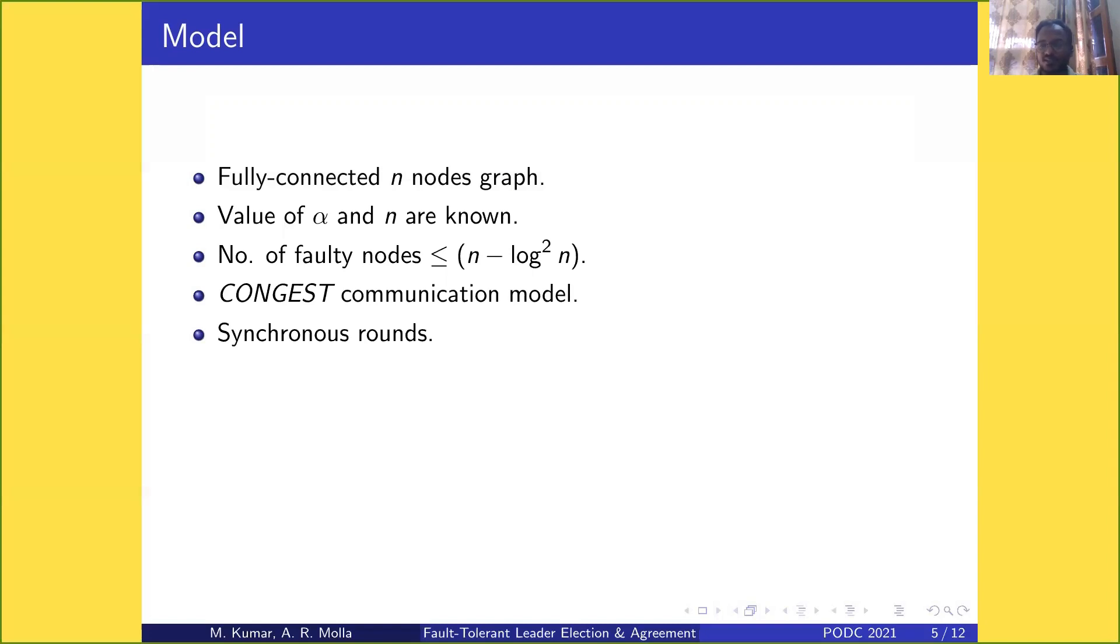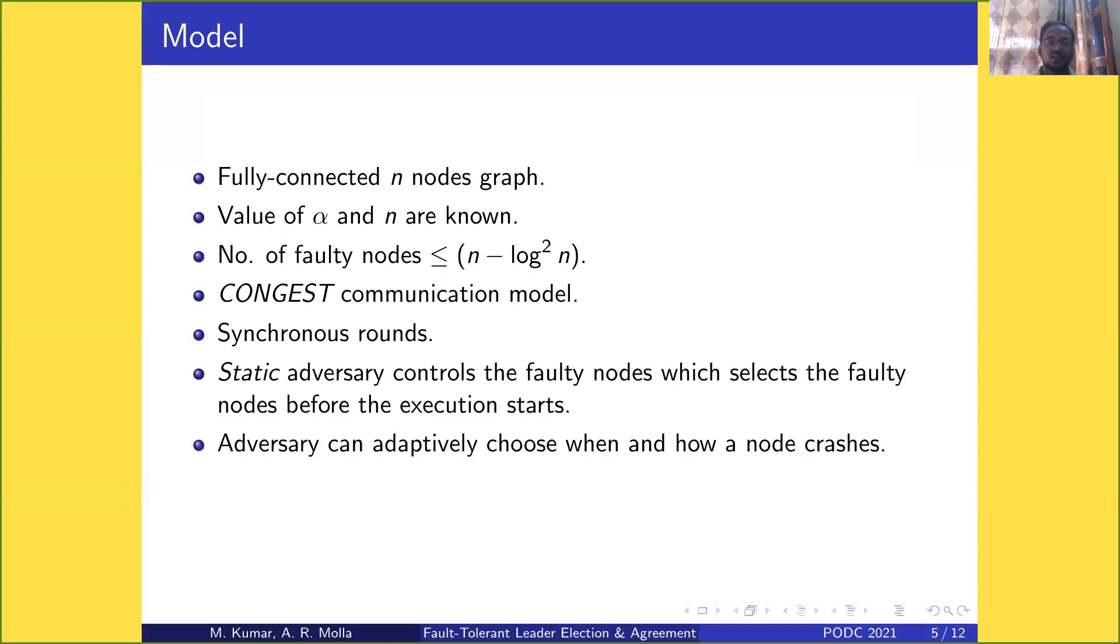If a message is sent in round r, it is received before round r+1. A static adversary controls the faulty nodes, selecting them before execution starts, but can adaptively choose when and how a node crashes. Each node has access to an arbitrary number of private random bits.